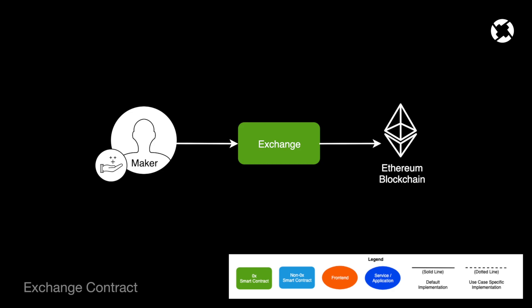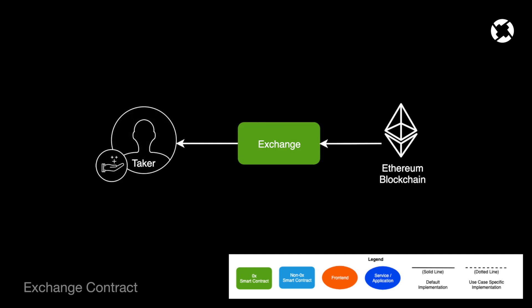This is how one might interact with the exchange contract at its most basic level without necessarily going through a relayer. This is essentially an example of an over-the-counter trade. We have a maker with an order and a taker comes in and takes that order and can submit it directly to the exchange contract where the trade will then be settled on the Ethereum blockchain.